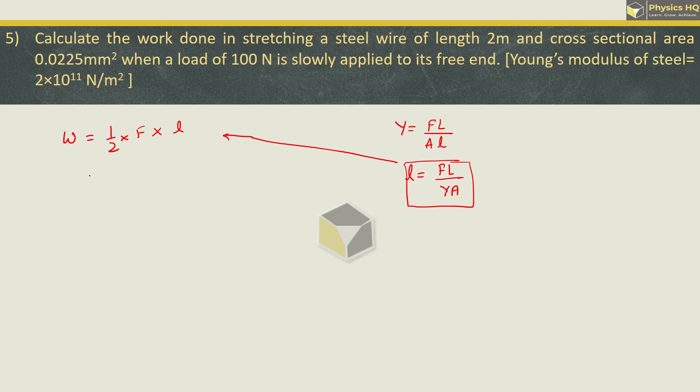We will put the same thing here. So we have work done equal to 1 by 2 f into small l which is f into capital L divided by Young's modulus into area. Force given is 100, length given is 2 divided by Young's modulus is 2 into 10 raised to 11. And area is 0.0225 mm square. Millimeter square to meter square will give us 10 raised to minus 6. Adjusting 2 decimals, this becomes 2.25 into 10 raised to minus 8 meter square.